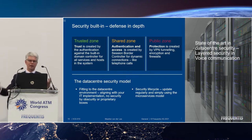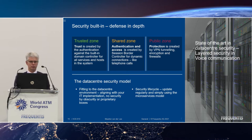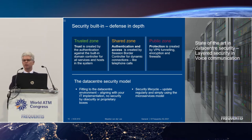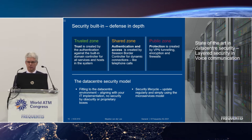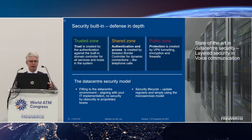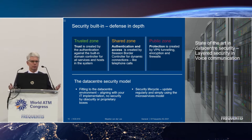Bringing that analogy to voice communication: the public zone covers everything related to telecom service provider connections and connections to the radios. They're nice people but can you really trust them? We protect ourselves using VPN tunneling, encryption, and firewalls. Since we are a communication system we actually have to communicate, so when calling another ANSP, we use session border controllers to support dynamic connections — mostly telephone.